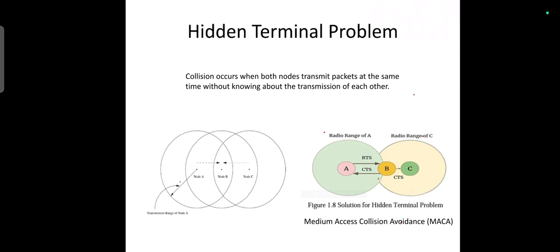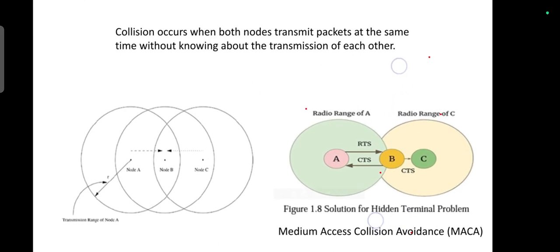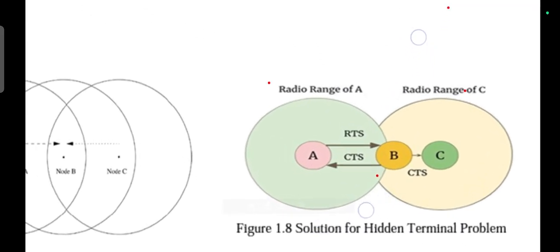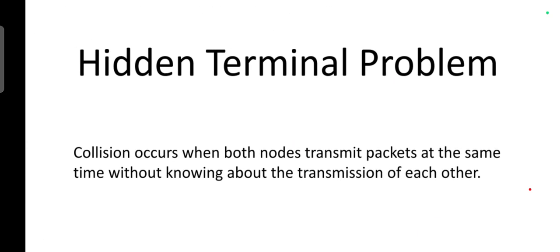The solution for this hidden terminal problem is Medium Access Collision Avoidance, MACA. This MACA can be done with the help of two-way handshaking signal, i.e., RTS and CTS.